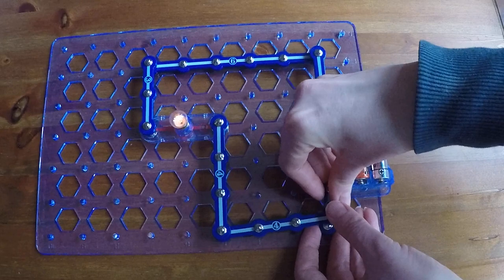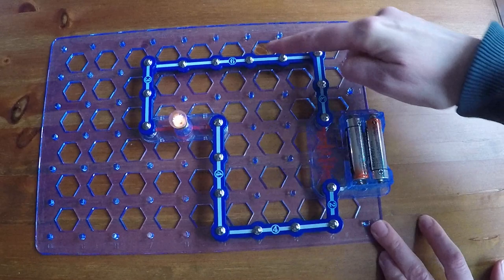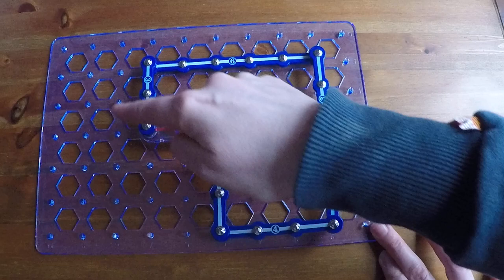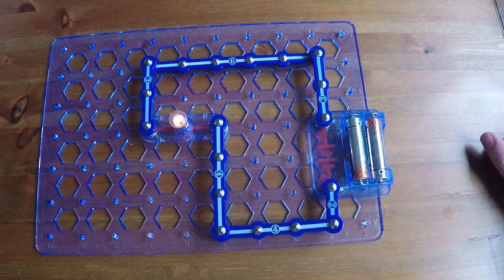One more piece. It's lighting up already. So here we've got a complete circuit. The electricity can flow all the way from the battery to the light bulb and round again and again. So it lights up.